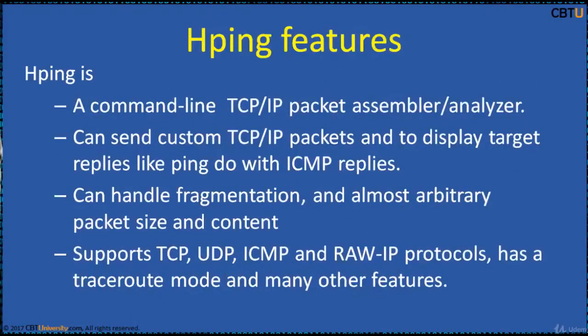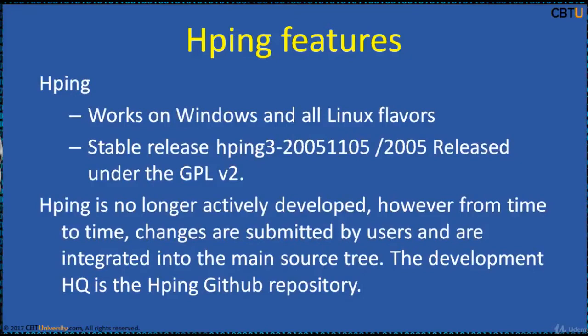HBing features include a CLI interface — a command line utility. It can send custom TCP/IP packets and display target replies like Ping does with ICMP replies. It can handle fragmentation and almost arbitrary packet size and content. It supports TCP, UDP, ICMP, and RAW IP protocols. It has a TraceRoute mode, the ability to send files between a covert channel, and many other features. HBing works on Windows and all Linux flavors. It is released under ZPL version 2.